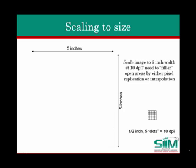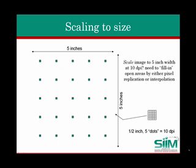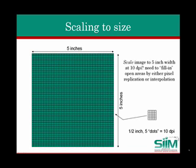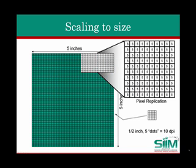The next step in the example is to scale the high-resolution 1.5 by 1.5 inch image back to a 5 inch by 5 inch dimension. This requires filling in the blank space in the areas of the expanded output image. Simple pixel replication, as shown in this illustration, is one solution, but does not improve the appearance of the output image, even though the image sampling resolution has been increased by a factor of 10. So, what must be done? A key processing step is pixel interpolation during scaling and replication to eliminate pixel boundary effects and blockiness in the image.